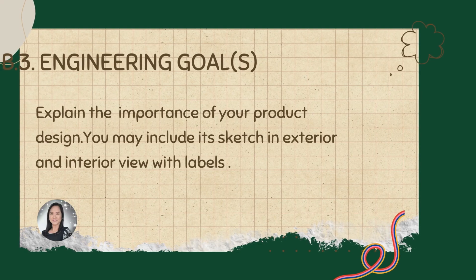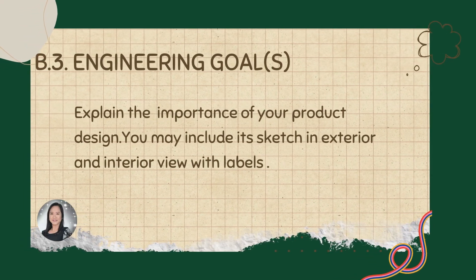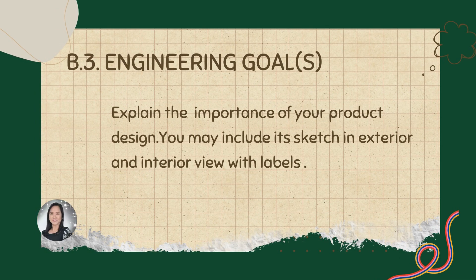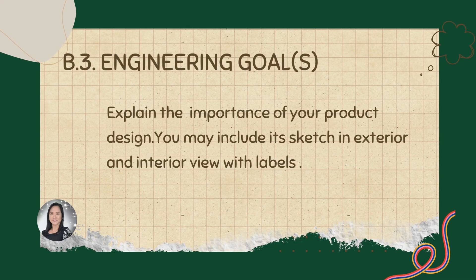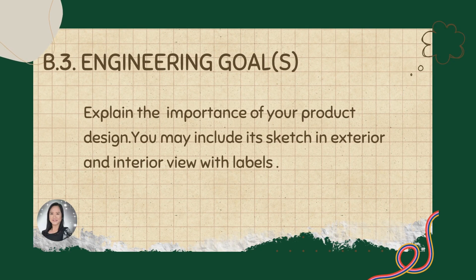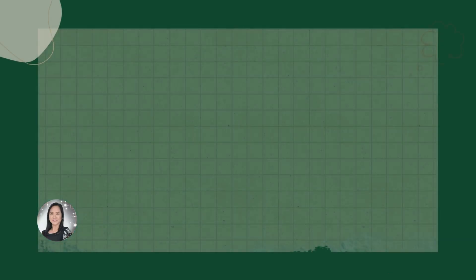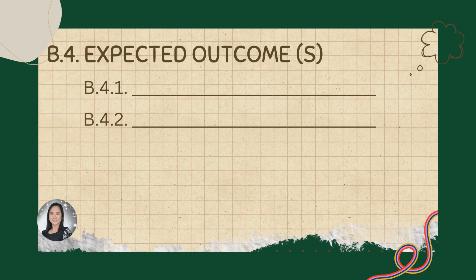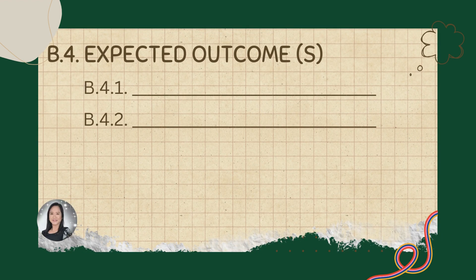We also have engineering goals under Part B, numbered as B.3. In here, you have to explain the importance of your product design. You may include its sketch in exterior and interior view with labels. Include also the expected outcomes of your research plan, numbered as B.4, and enumerate them as B.4.1, B.4.2, etc.